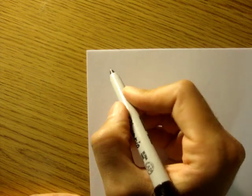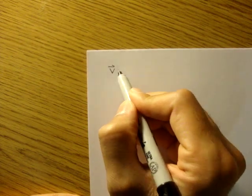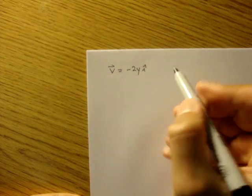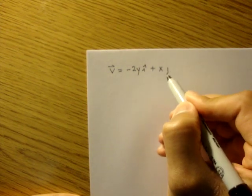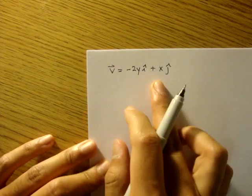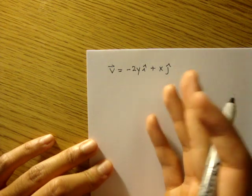Our velocity is given by negative 2yi plus xj. Notice that it's a steady flow because there's no time variable t. It doesn't depend on time.